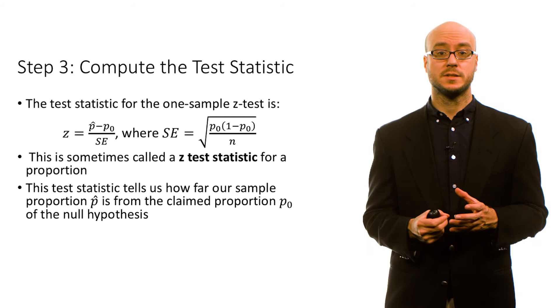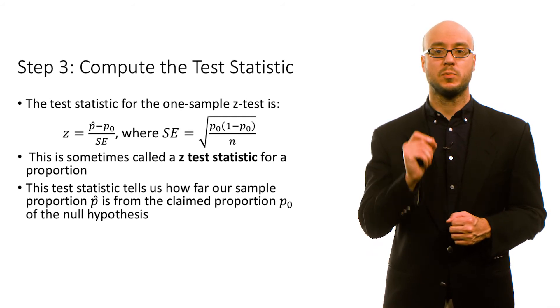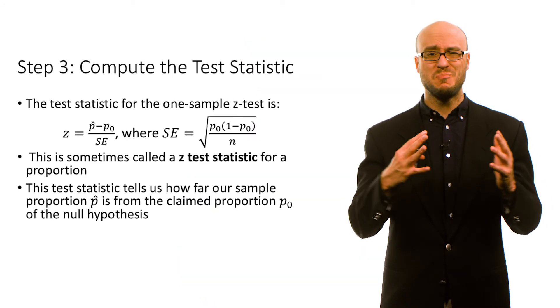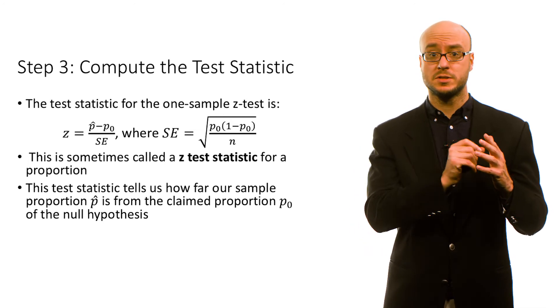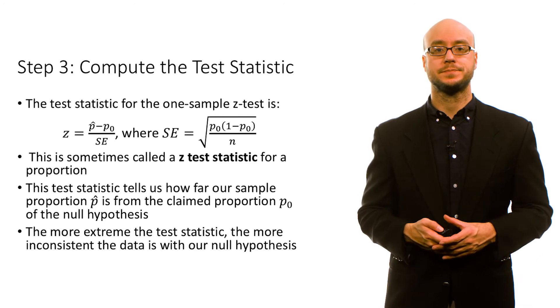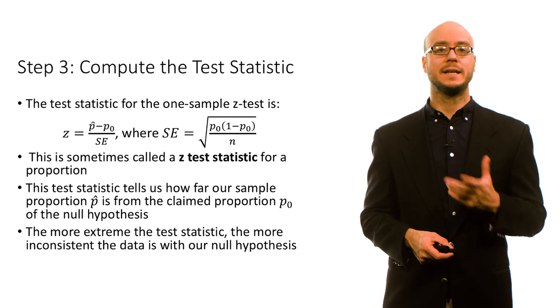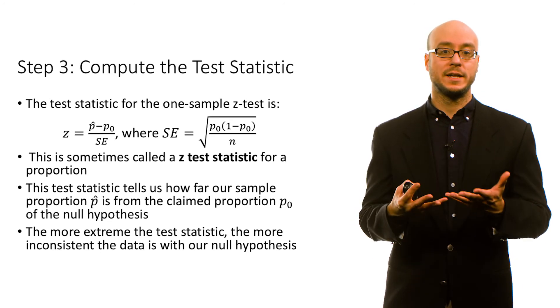Just like with the mean, this test statistic tells us how far the sample proportion p-hat is from the claimed proportion p₀ of the null hypothesis. We assume the sampling distribution is centered around p₀, then we calculate p-hat and compare how different it is from p₀. From sampling variability, we know most values for sample proportions should be close to the center of that sampling distribution. The more extreme the test statistic, the more inconsistent the data is with our null hypothesis, and the more likely we are to reject that null.